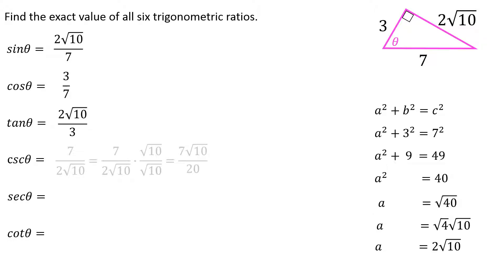Cosecant is the reciprocal of sine. Of course I'm not going to leave it as 7 over 2√10, so I have to rewrite this and I get 7√10 over 20. Secant, of course, the reciprocal of cosine, that's just 7 thirds.